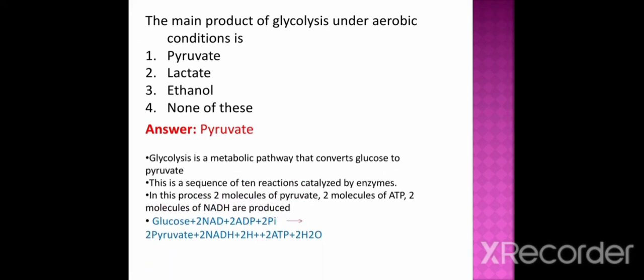Glycolysis is the metabolic pathway that converts glucose to pyruvate. This is the sequence of chain reactions catalyzed by enzymes. In this process, 2 molecules of pyruvate, 2 molecules of ATP, and 2 molecules of NADH are produced. The net reaction of glycolysis is: glucose + 2 NAD+ + 2 ADP + 2 Pi (inorganic phosphate) produces 2 pyruvate + 2 NADH + 2 H+ + 2 ATP + 2 molecules of water.